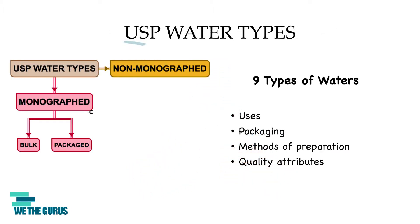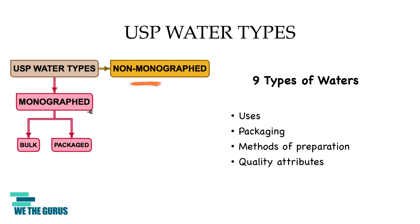The United States Pharmacopoeia specifies uses, packaging, methods of preparation, and quality attributes of water that are commonly used for pharmaceutical purposes. These nine types of water are also known as monograph waters. All other waters such as drinking water or distilled water fall under the category of non-monograph waters. Remember that all non-monograph waters are bulk waters that are typically used for manufacturing or analytical purposes. For this video we will primarily focus on monograph waters.